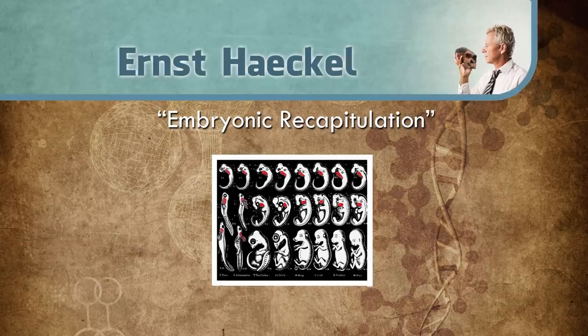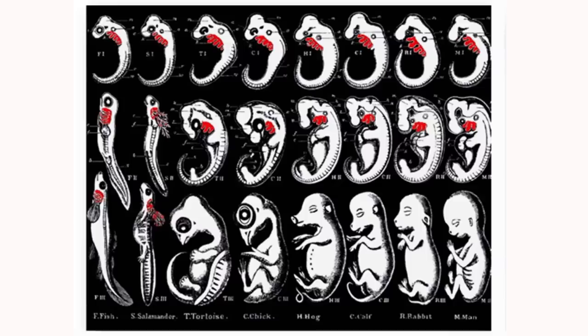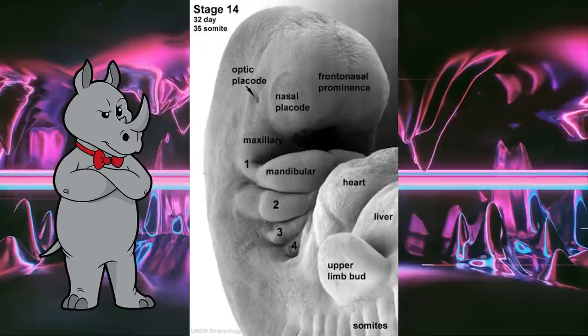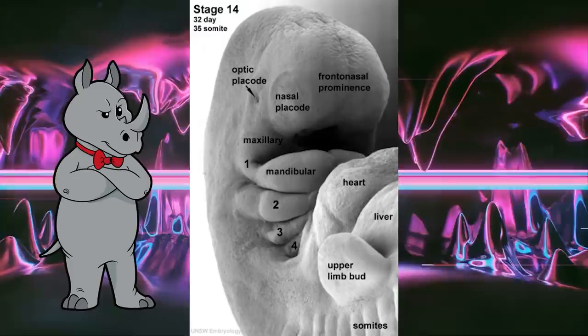A German biologist and avid supporter of Darwin popularized the theory now known as embryonic recapitulation — the biogenetic law, not to be confused with the law of biogenesis. This is the idea that embryos, as they develop in the womb, repeat the evolutionary development of their species. Which has been shown to be false, which is why it is not used as evidence for evolution. Maybe move on to how the gill slits in fish share a developmental path with structures in humans.